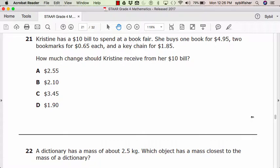A, two dollars and fifty-five cents. B, two dollars and ten cents. C, three dollars and forty-five cents. Or D, one dollar and ninety cents.